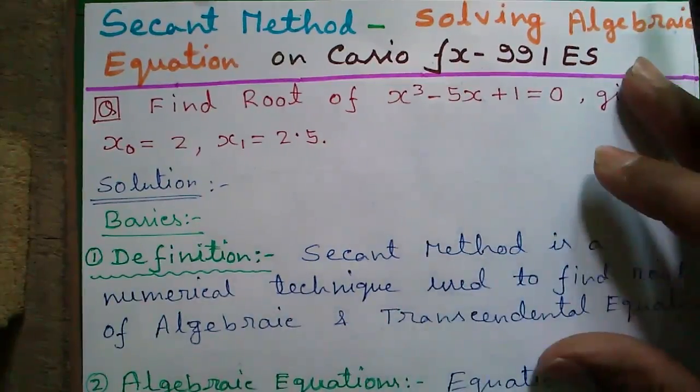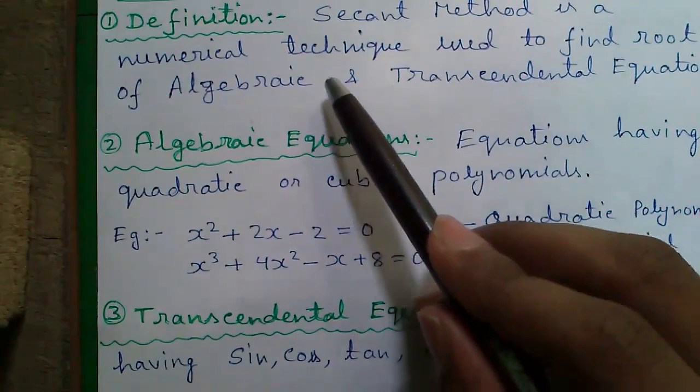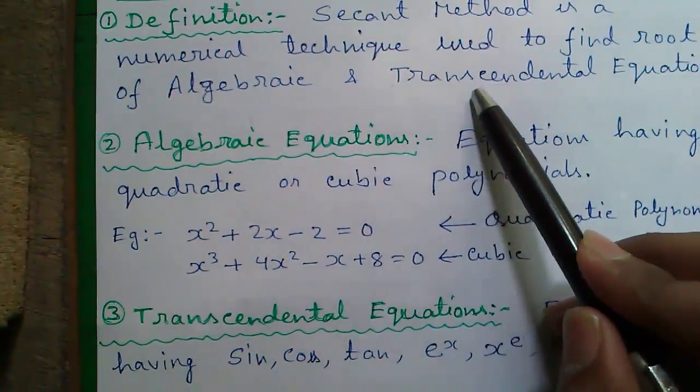So first some basics. The definition of secant method. Secant method is a numerical technique used to find roots of algebraic and transcendental equations.